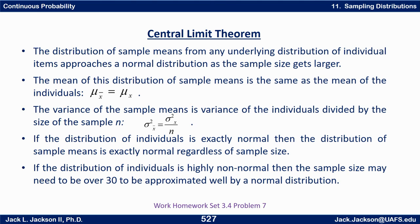This is no coincidence — this is called the central limit theorem. The distribution of sample means from any underlying distribution of individual items approaches a normal distribution as the sample size gets larger. The mean of this distribution of sample means is the same as the mean of the individuals: mu of x-bar equals mu of x. The variance of sample means is the variance of the individuals divided by n. If the distribution of individuals is exactly normal, then the distribution of sample means is exactly normal regardless of sample size. If it's highly non-normal, the sample size may need to be over 30; if it's closer to normal, far less than 30 will suffice.